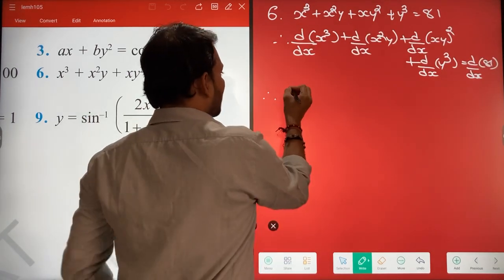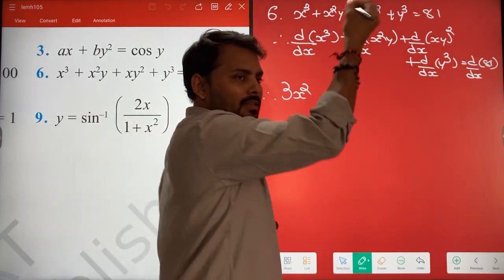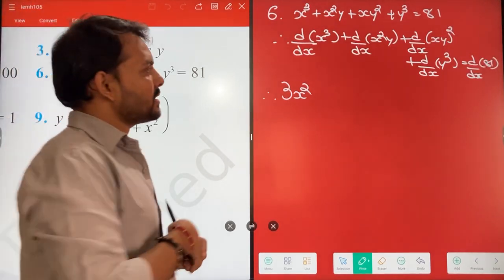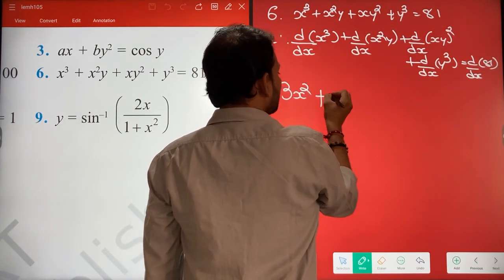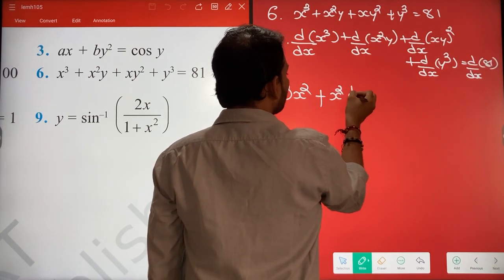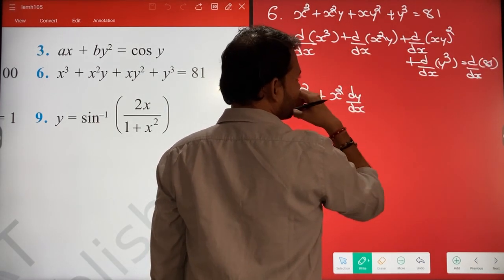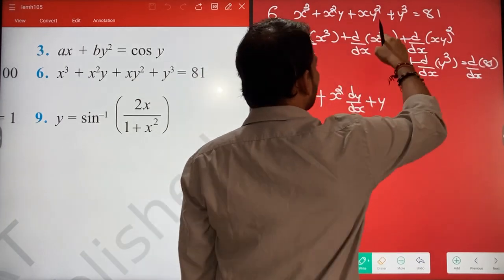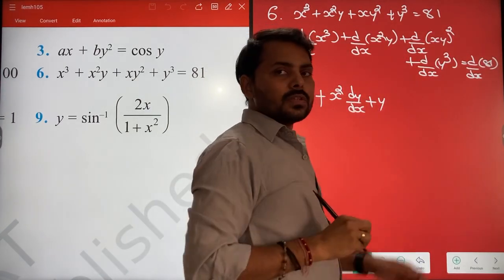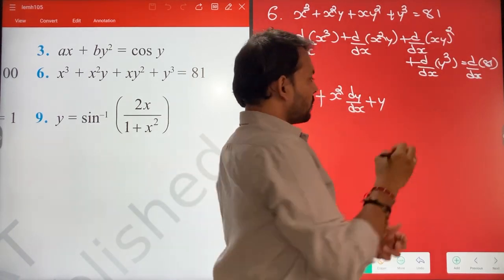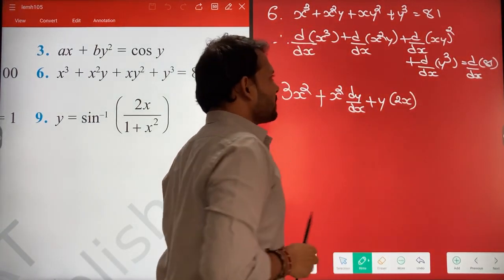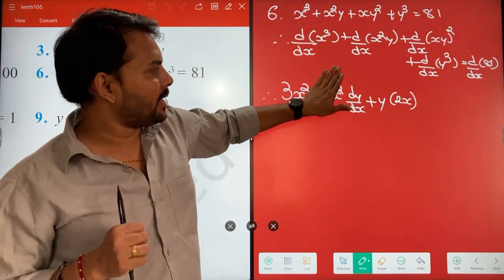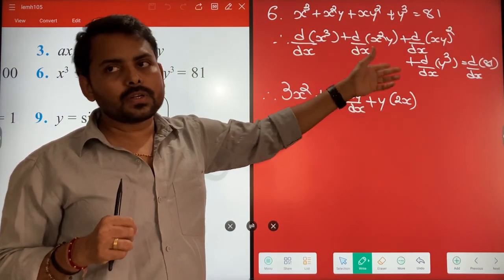X cube ka kya hoga? 3X square, very good. N X raise to N minus 1, so 3X square. Now, yaha pe u into v lag jayega, so hum lagate hai u into v. X square constant, Y ka differentiation divided by dx, plus Y constant, X square ka differentiation with respect to X. Direct kar diya. U into v - u constant, to X square o constant rakha, v ka differentiation to dy by dx, phir v constant, to Y constant, X square ka differentiation to 2X.